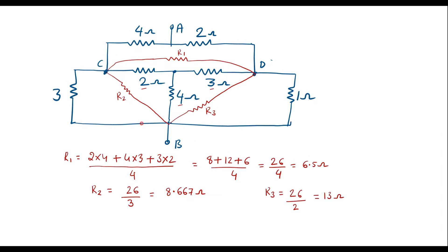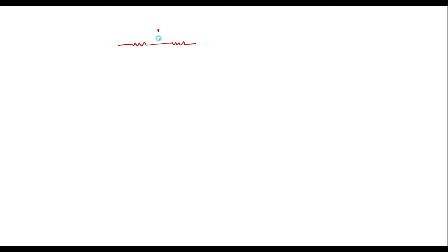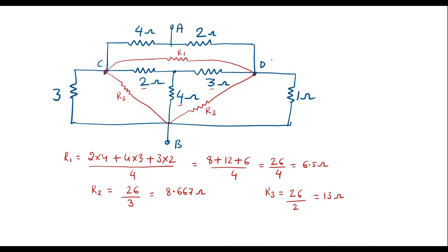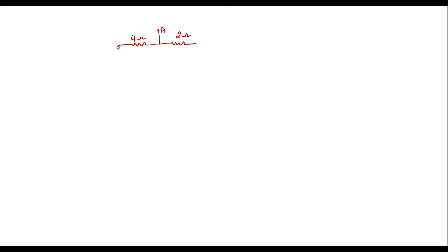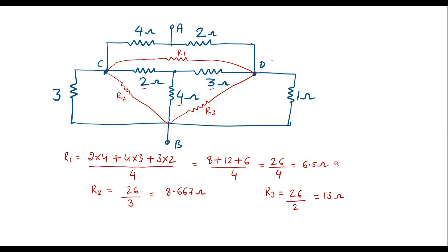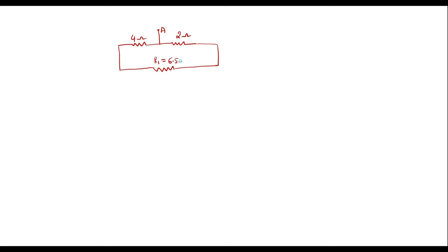So R1, R2, R3 resistance values have been found. Now let me redraw the circuit. Here 4 ohm and 2 ohm appear as they are, with terminal A shown. Then R1 = 6.5 ohm is connected between nodes C and D.